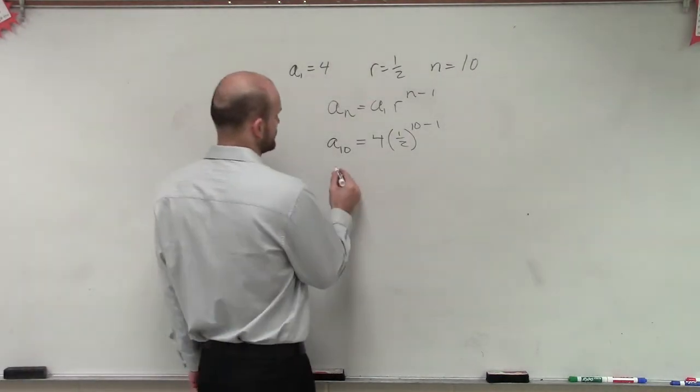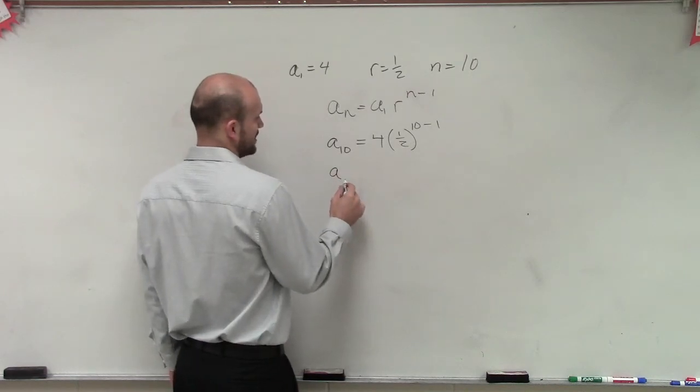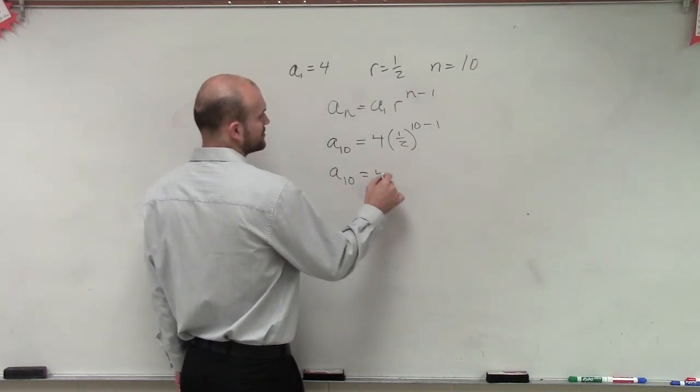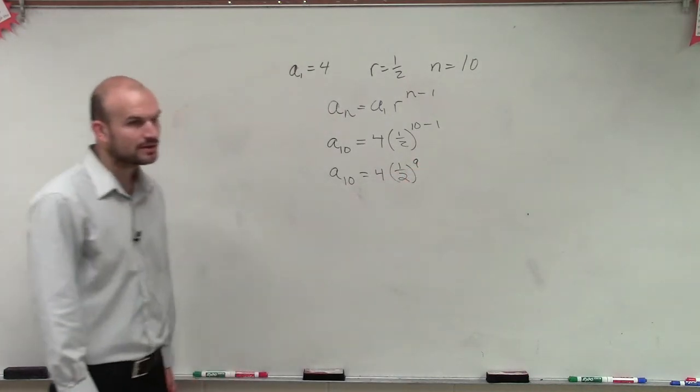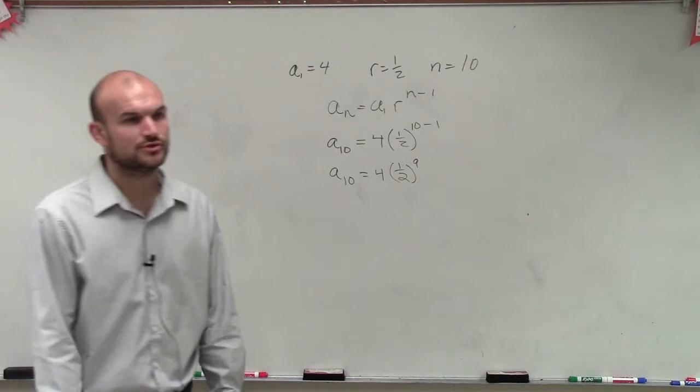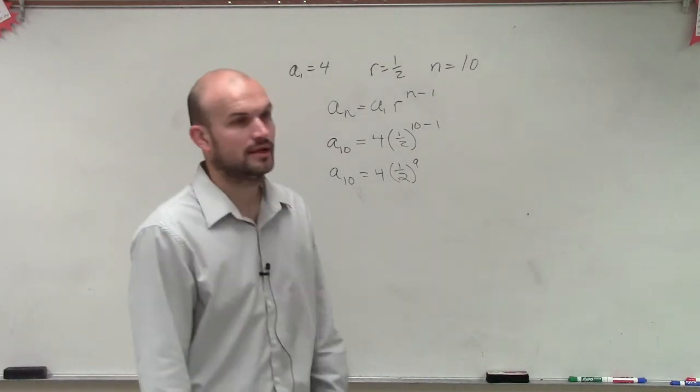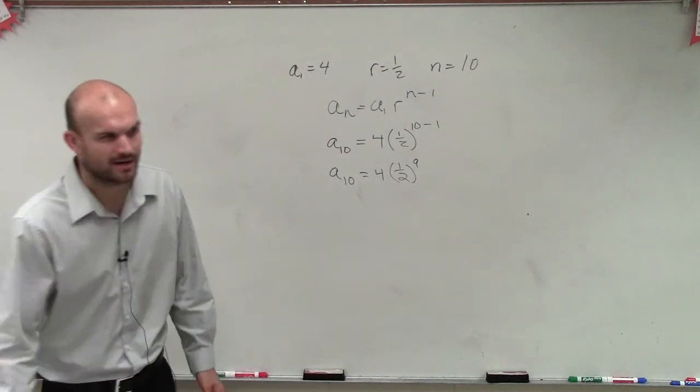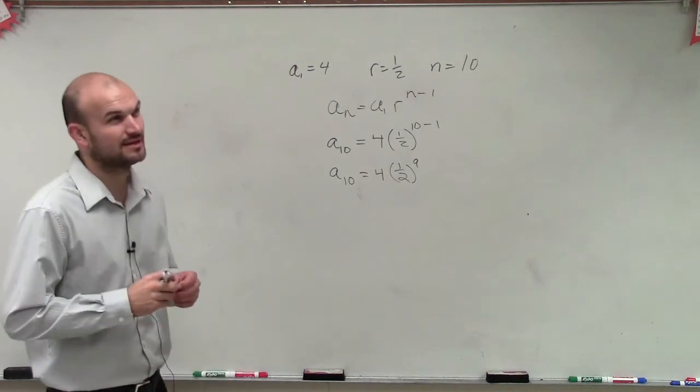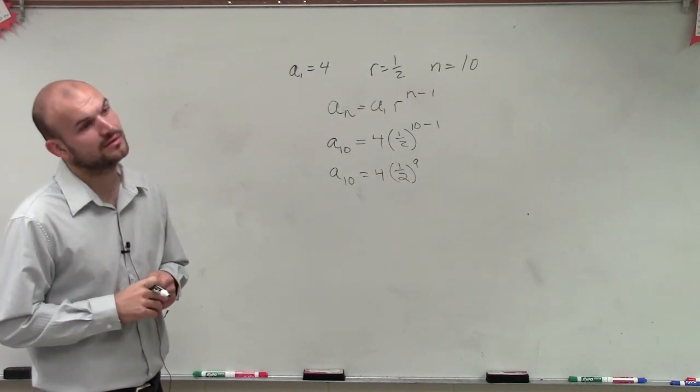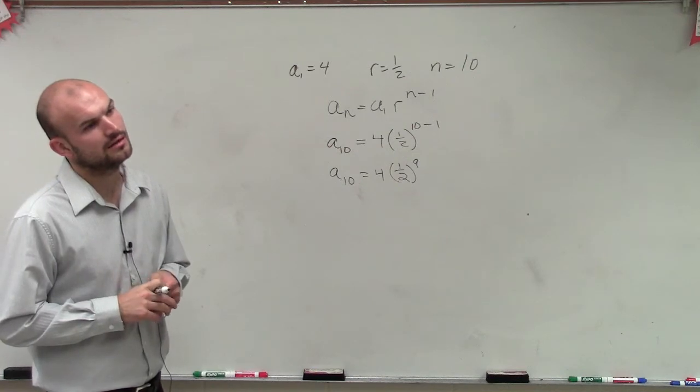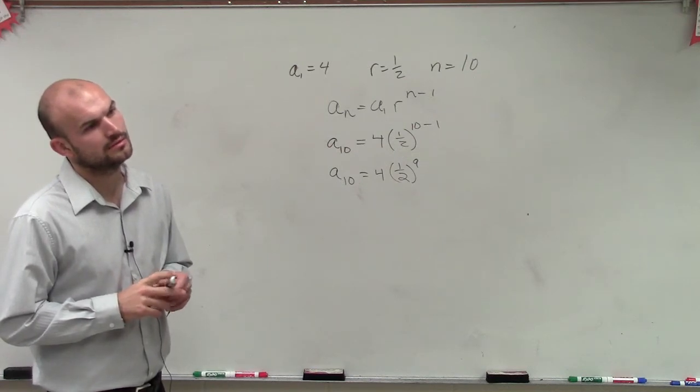And then we just need to do this. So we have a to the 10th power equals 4 times 1 half raised to the 9th power. 2 to the 9th power, anybody? 2 to the 9th power? I don't know what 2 to the 9th power is. Let's see, 564? Huh? 2 to the 9th power is 512.